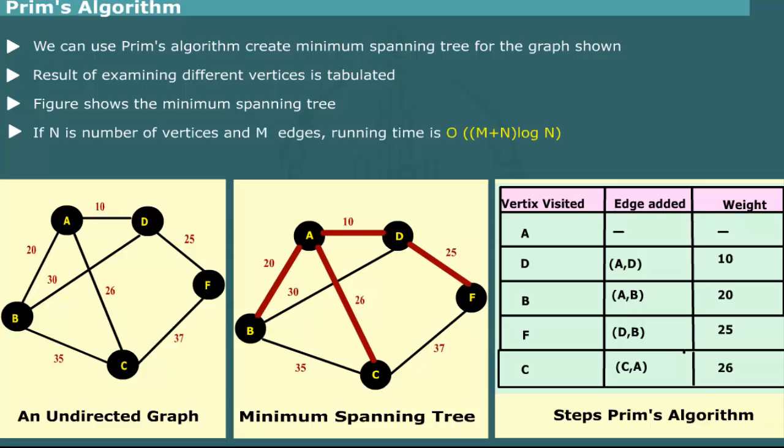If n is the number of vertices and m the number of edges, the Prim's Algorithm has running time of O(m + n log n). Being logarithmic, it is quite efficient.